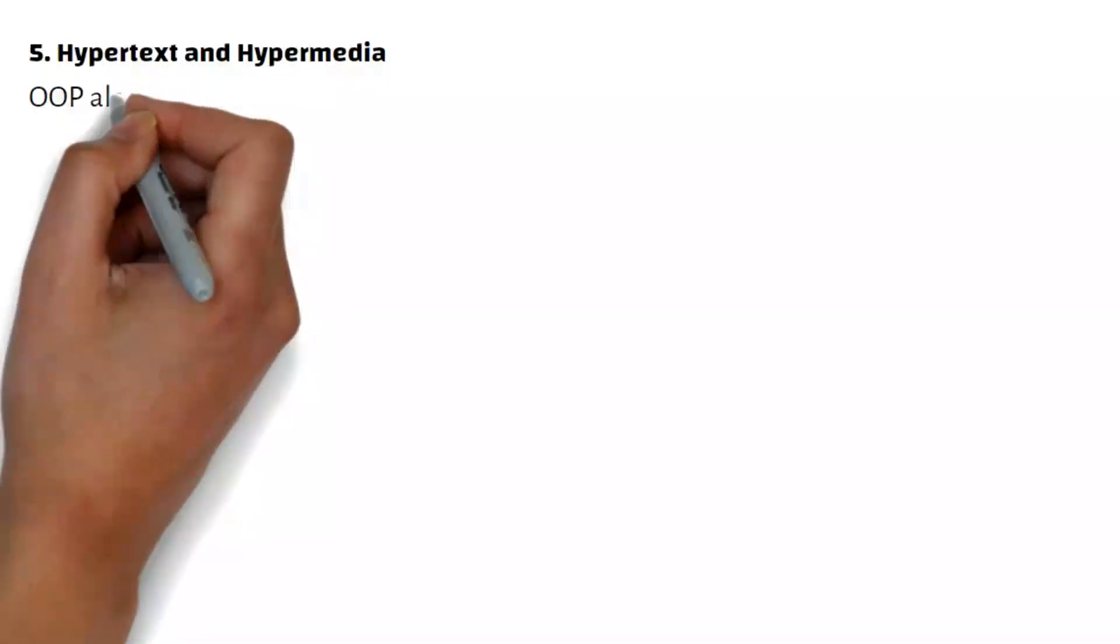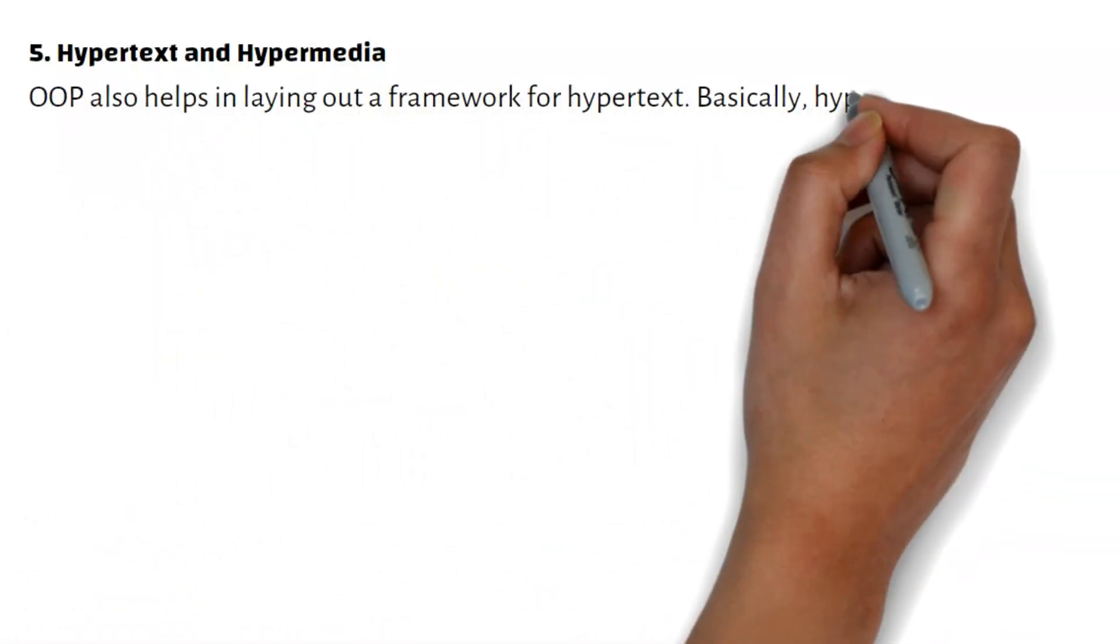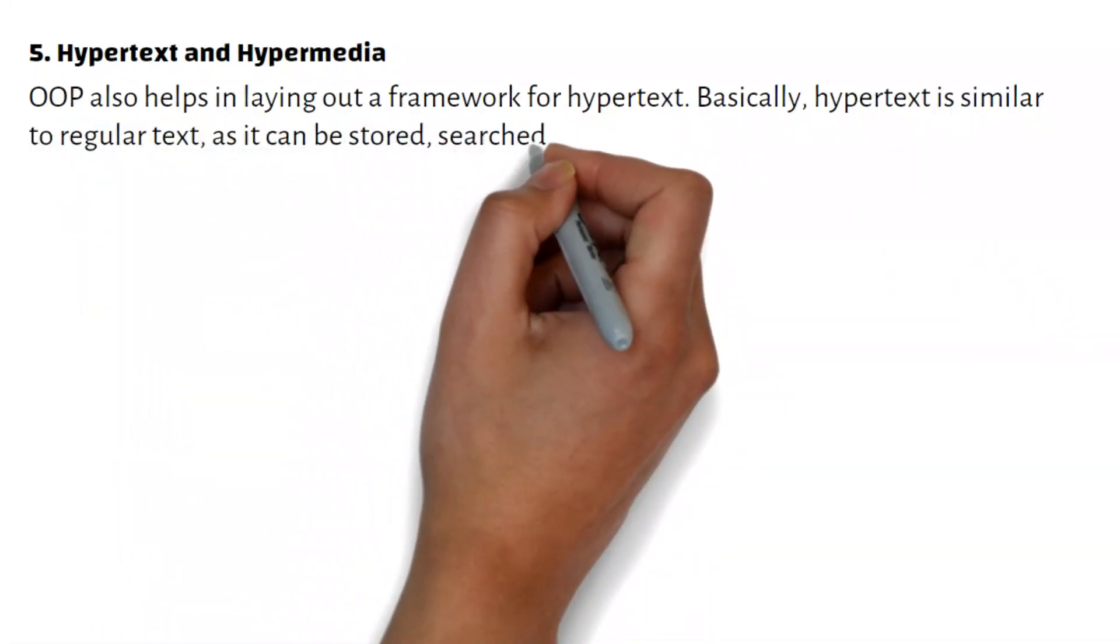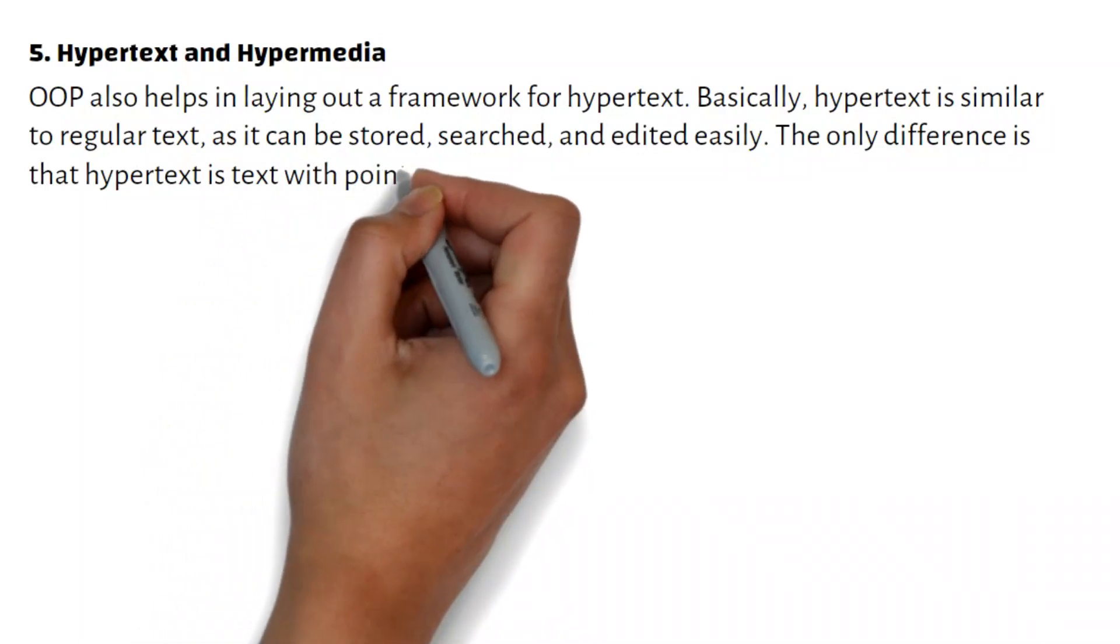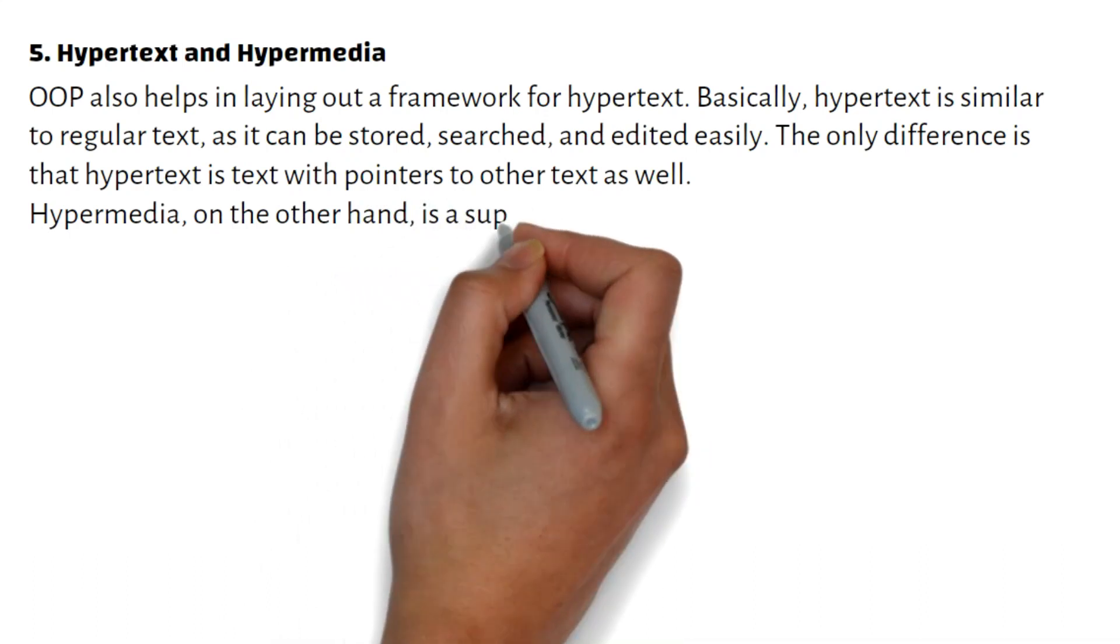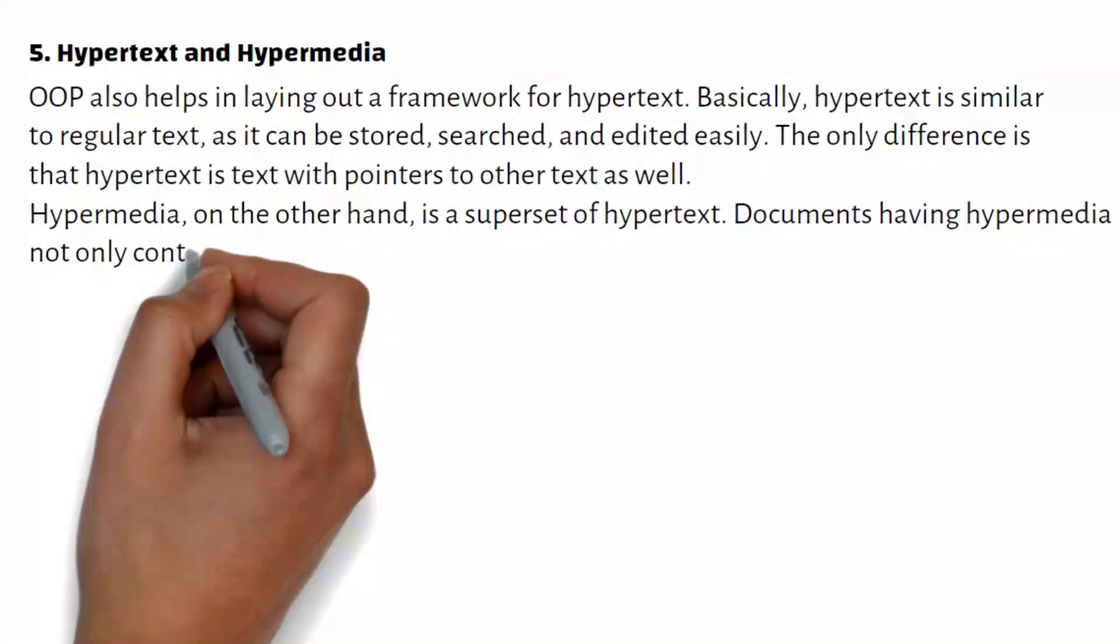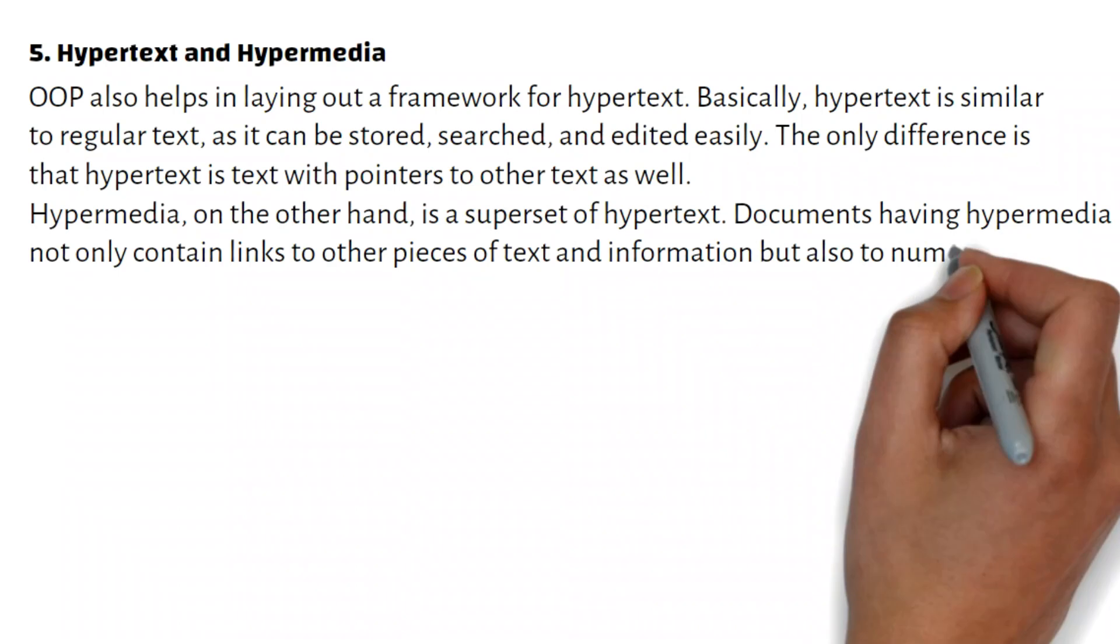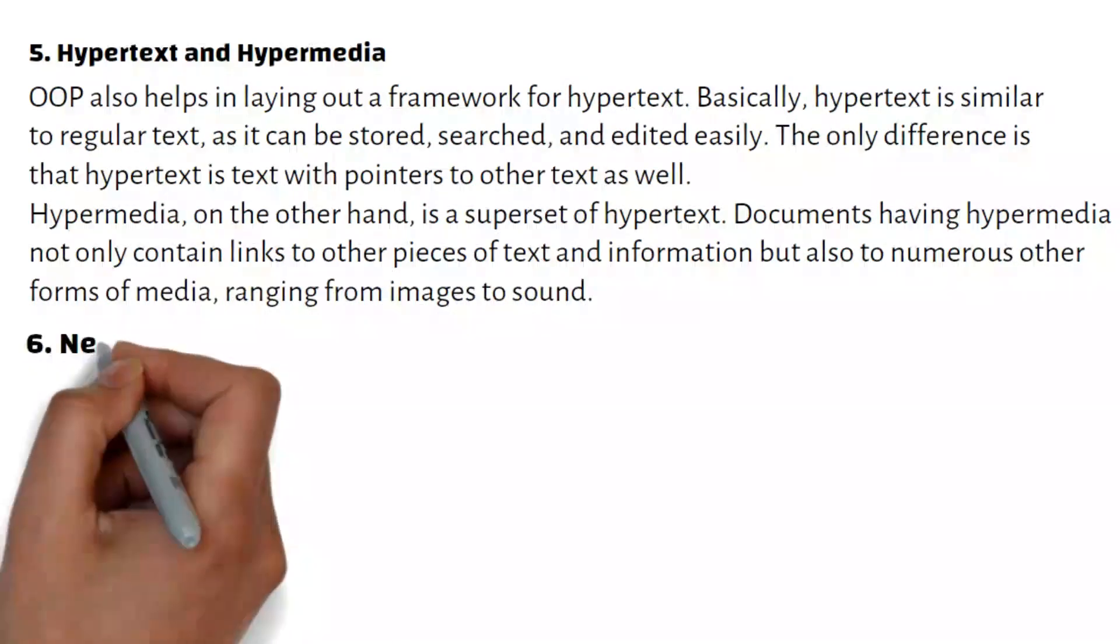Hypertext and Hypermedia: OOP helps in laying out a framework for hypertext. Basically, hypertext is similar to regular text as it can be stored, searched, and edited easily. The only difference is that hypertext is text with pointers to other text as well. Hypermedia, on the other hand, is a superset of hypertext. Documents having hypermedia not only contain links to other pieces of text and information, but also to numerous other forms of media, ranging from images to sound.